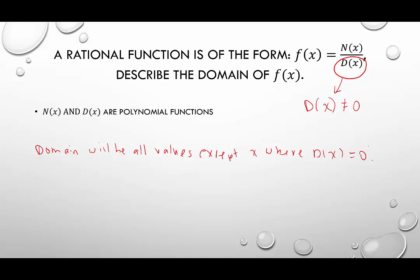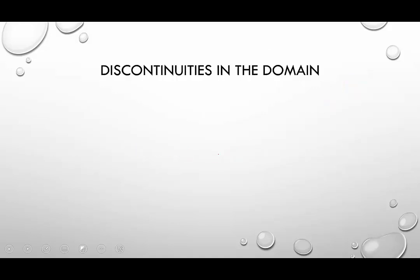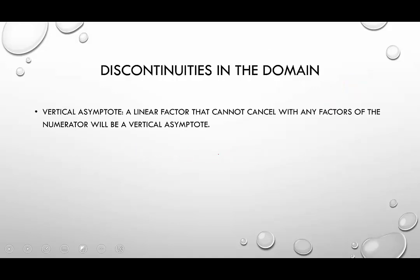These restrictions — when the denominator is equal to zero — can do one of two things to our graph. When we have discontinuities in the domain, we could have a vertical asymptote. That is a vertical line; we usually draw a dashed line to represent it because it's not actually part of the function. The graph is going to get really close to this and it's never ever going to touch the asymptote. We know it's a vertical asymptote when there's a linear factor in the denominator that cannot cancel with any factors of the numerator.